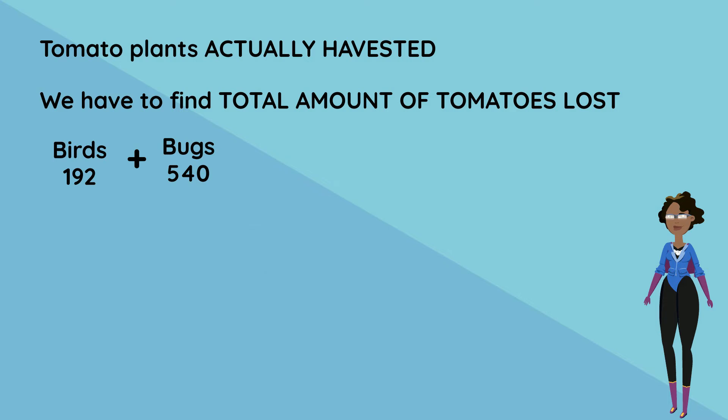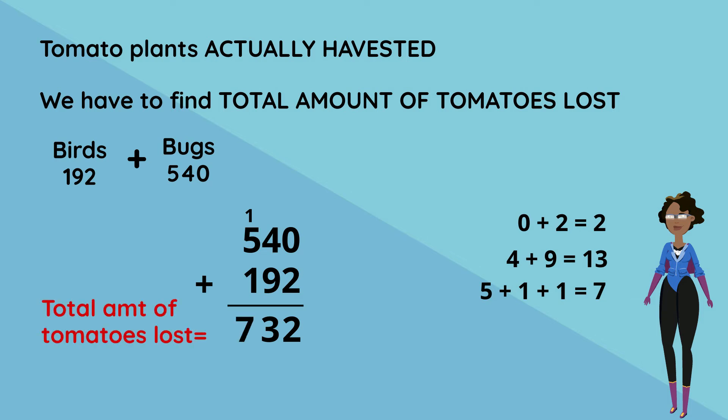So first we add 540 plus 192. 0 plus 2 equals 2. 9 plus 4 equals 13. We leave the second digit and carry across the first. We now have 5 plus 1 plus the one we regroup which gives us 7. The total amount of tomatoes Fred lost is 732.